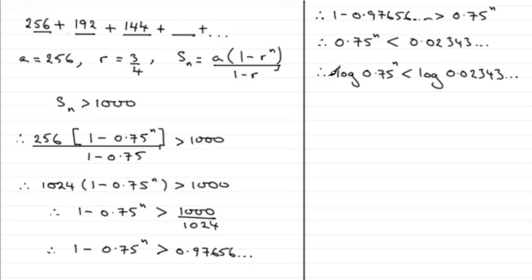Then we can use the power rule for logs. Remember, if you've got a power on something where you've got the log of it, you can bring this power out to the front. So this becomes n multiplied by the log of 0.75, and that is less than the log of 0.02343 and so on.